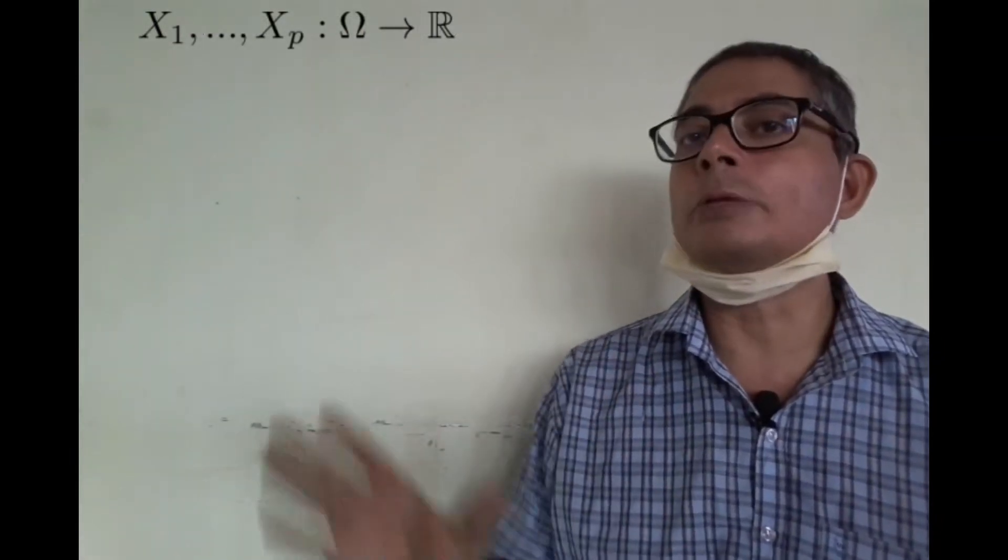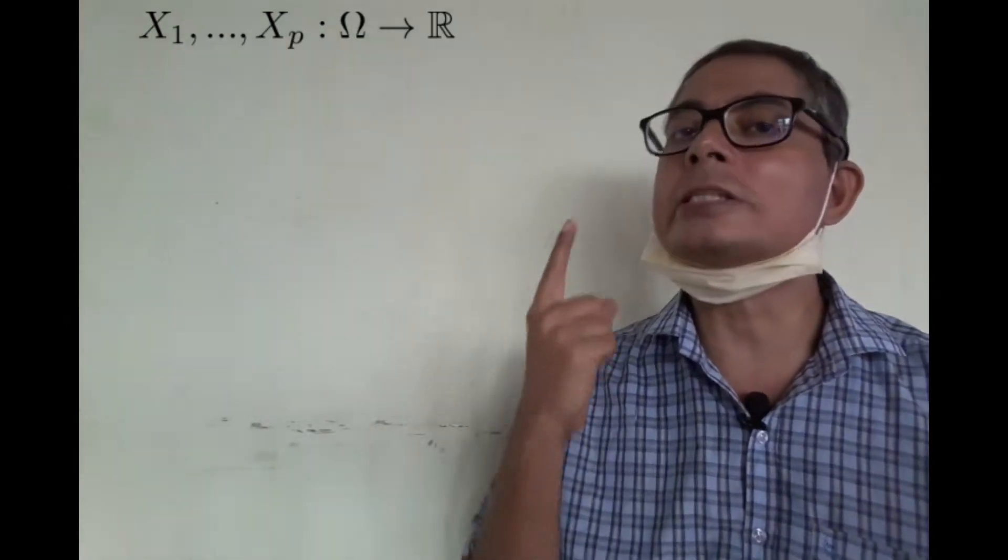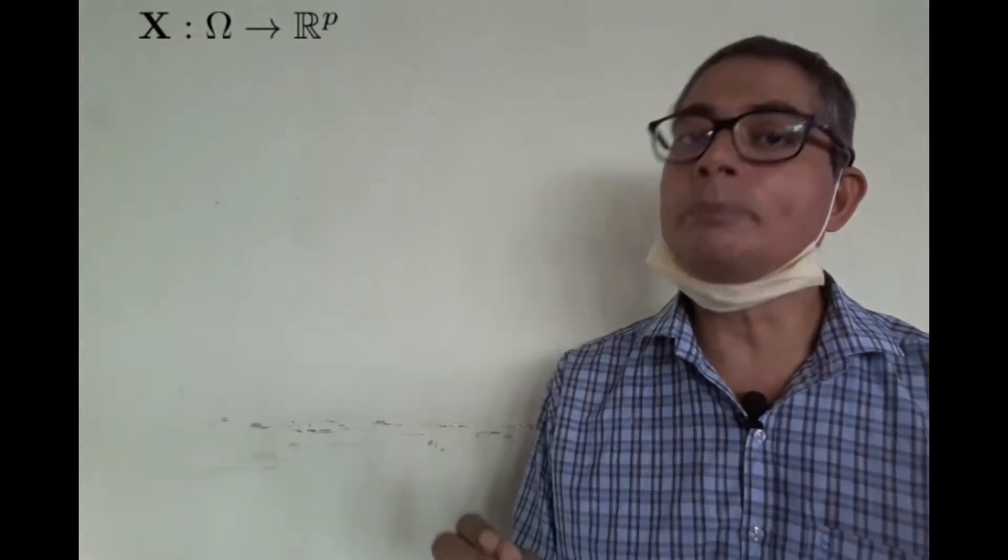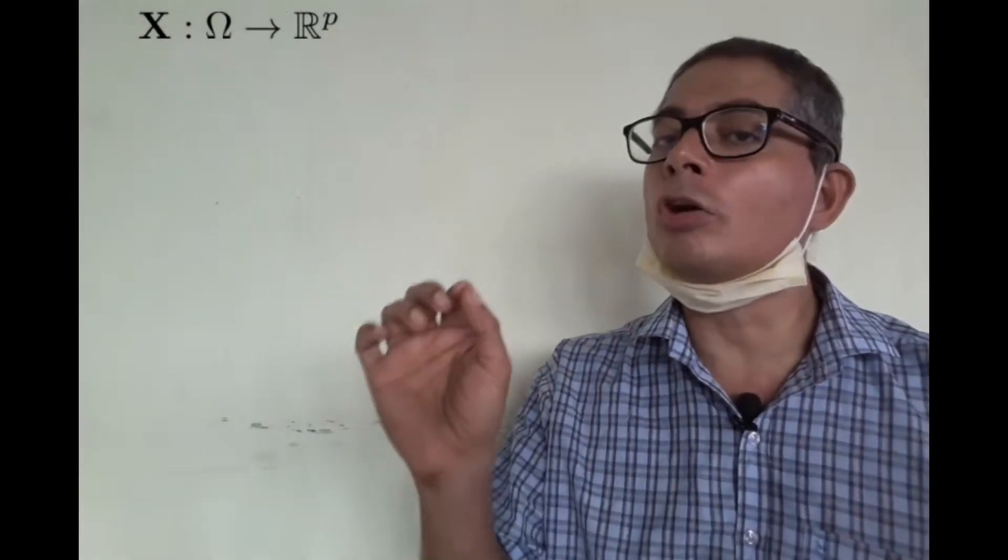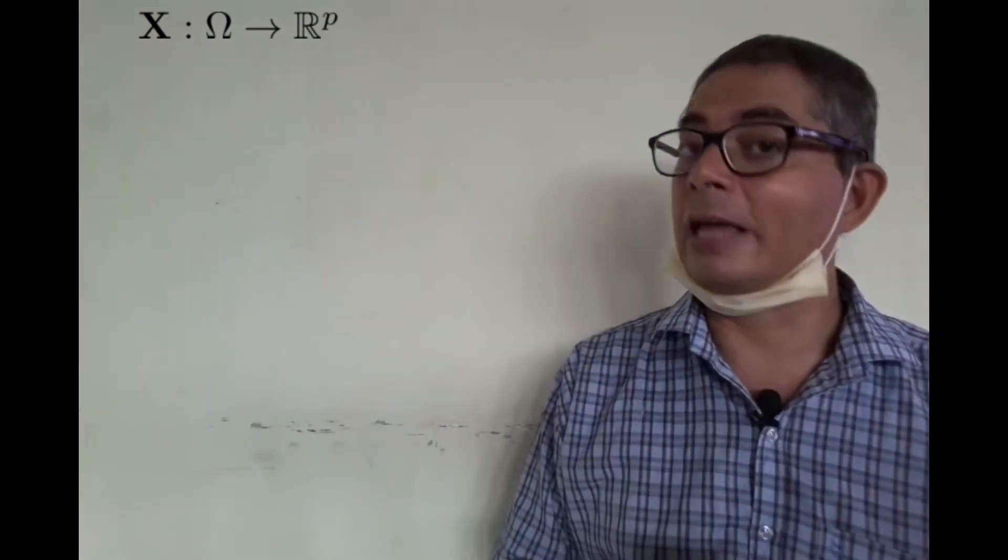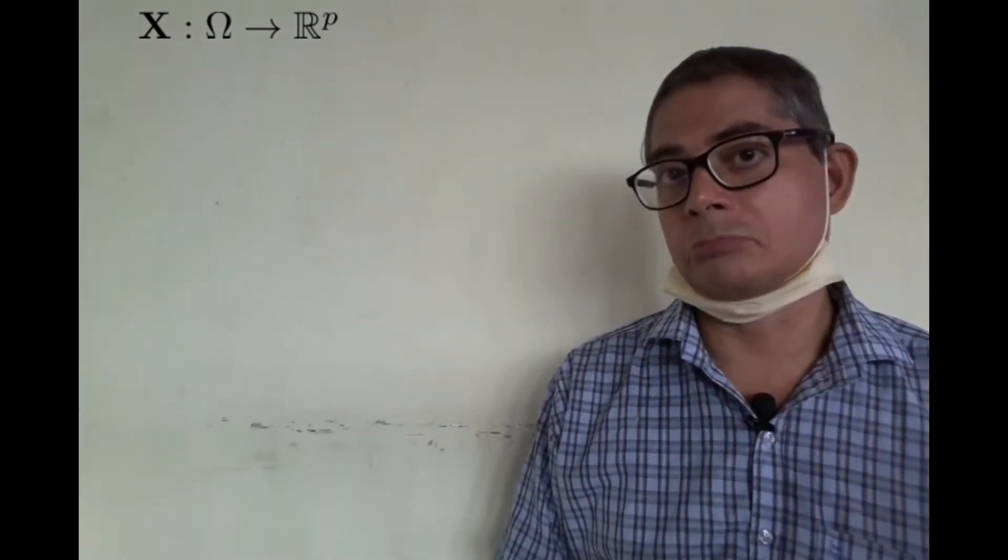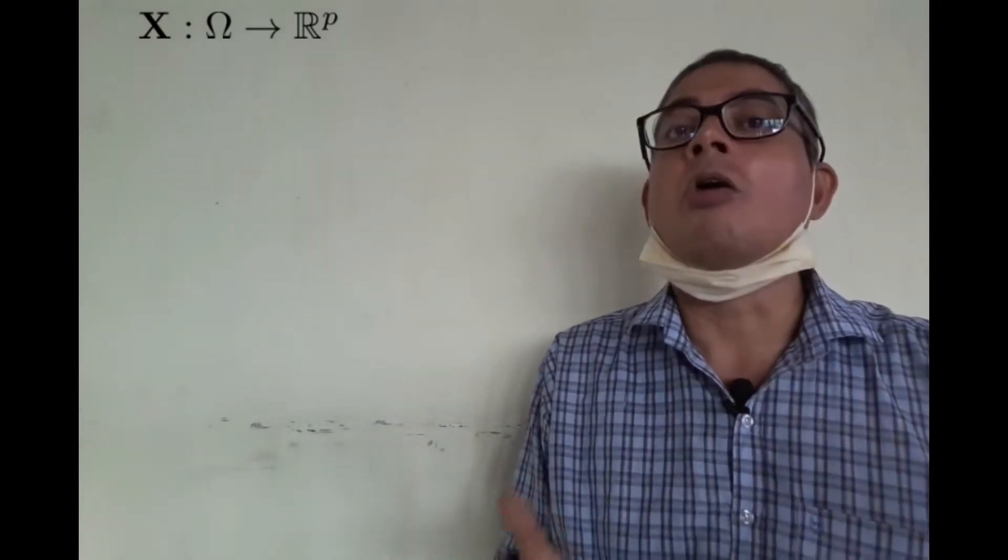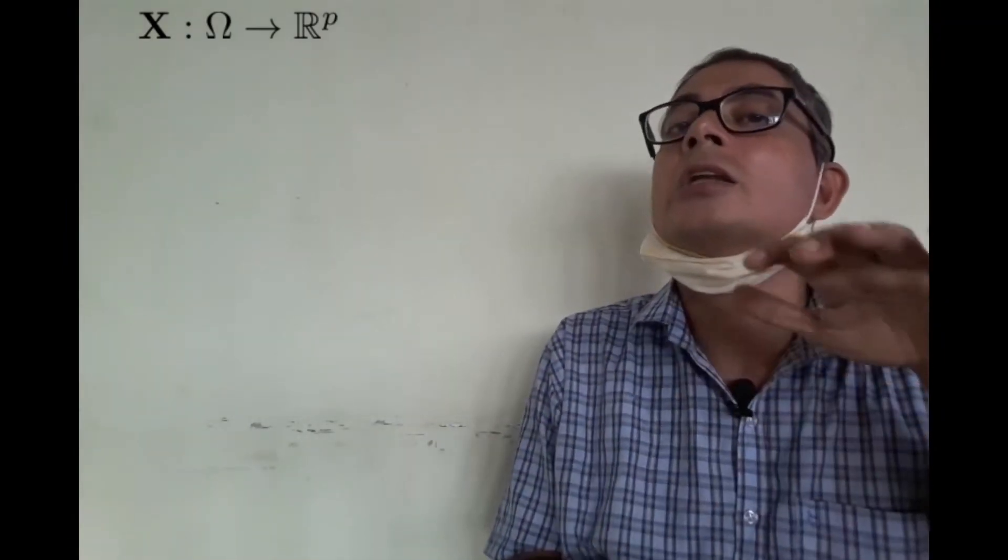Now sometimes we pack all these things into a single vector-valued function. So when we pick an individual ω at random, we get a random vector as the value—like height, weight, and blood pressure of a randomly selected person, all bundled as a single triple.